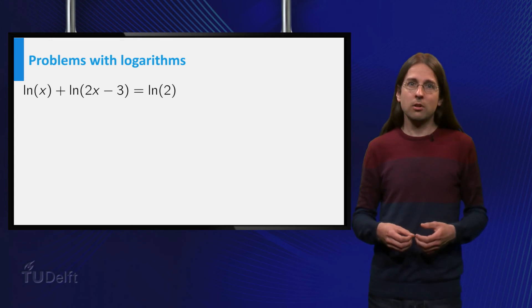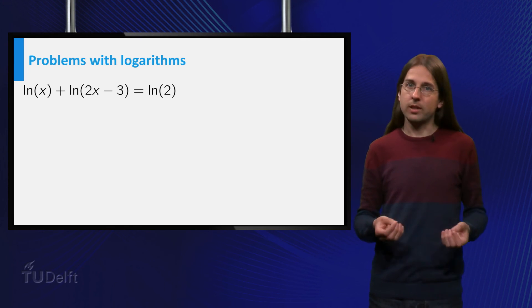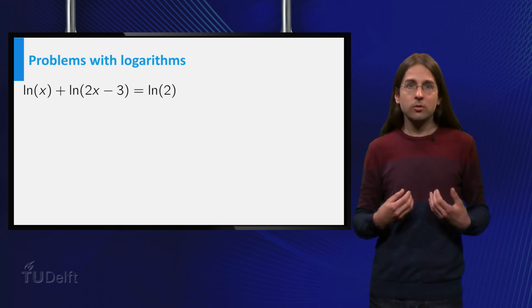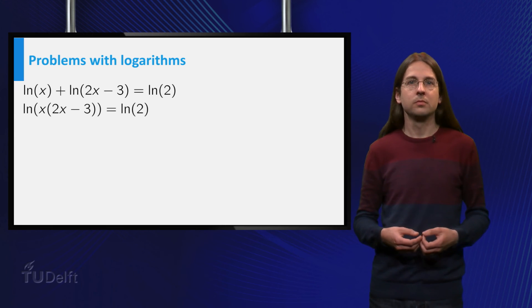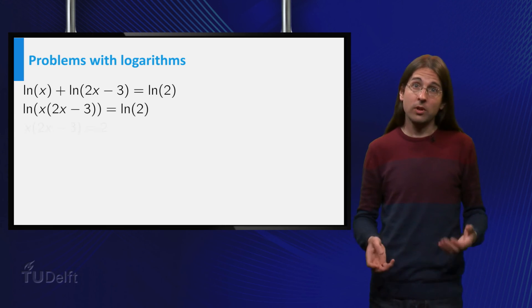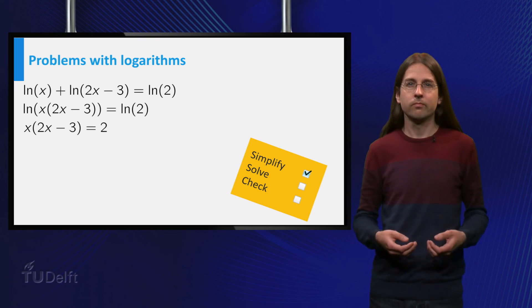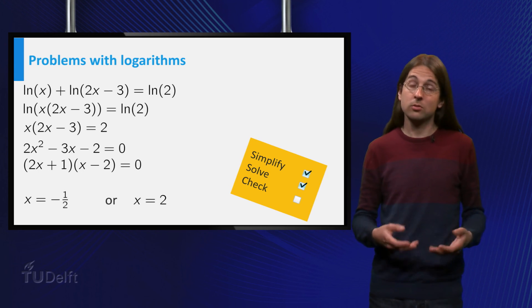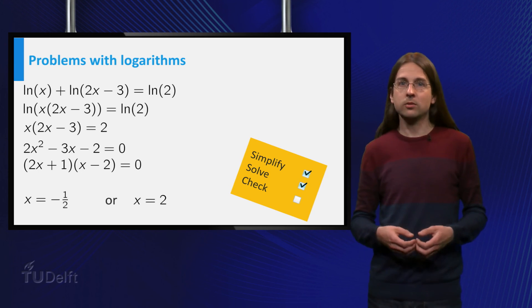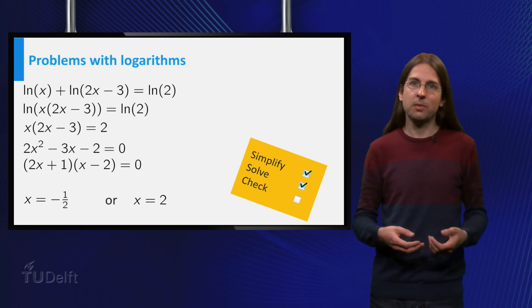Consider the natural logarithm of x plus the natural logarithm of (2x-3) equals the natural logarithm of 2. All logarithms are already in the same base, so that is fine. Using the rules of calculation, this equation reduces to ln(x(2x-3)) = ln(2). Thus we need to solve x(2x-3) = 2. This is equivalent to 2x² - 3x - 2 = 0, which can be factored to (2x+1)(x-2) = 0.